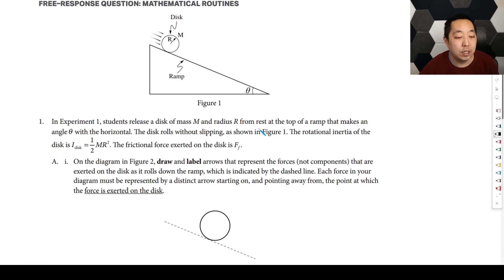So let's take a look at this. Experiment 1: students release a disk of mass M and radius R from the top of a ramp that makes an angle theta with the horizontal. The disk rolls without slipping, and the rotational inertia of the disk is given by this. The diagram drawn represents the forces that are exerted on the disk as it rolls down the ramp, which is indicated by the dashed line. For each force, a diagram must be distinct by a distinct arrow starting on and pointing away from the point at which the force is exerted on the disk.